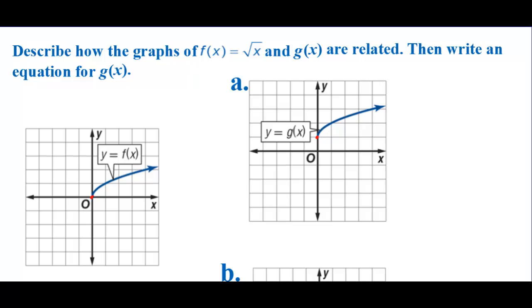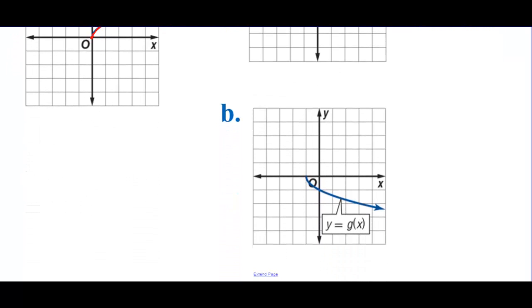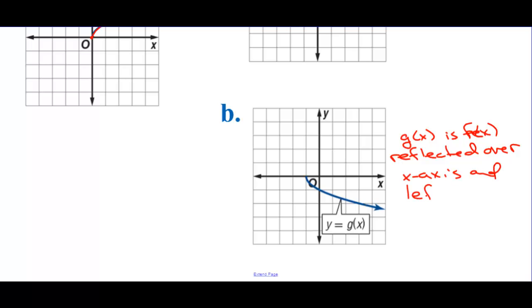Describe how the graphs of f of x equals square root of x and g of x are related, then write an equation for g of x. If this is f of x, g of x is f of x translated up 1. So g of x is equal to square root of x plus 1. On the second one, g of x is f of x reflected over the x-axis and shifted left 1. So g of x is equal to negative square root of (x plus 1).